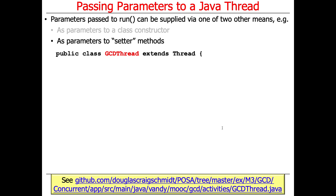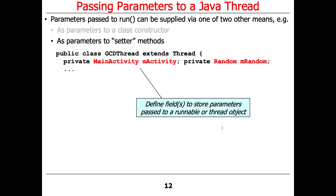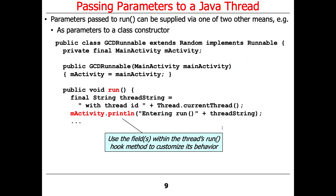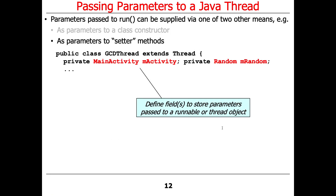That's one very common way to do things. An alternative is to have setter methods in the class and use those to explicitly set whatever parameters you want passed to the computations running in the background. In this slightly different approach, unlike the previous one where we implemented Runnable, here we're going to just extend Thread directly — so there is no separate Runnable.